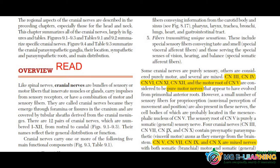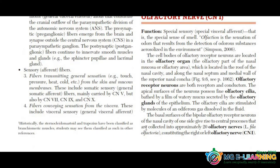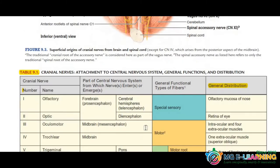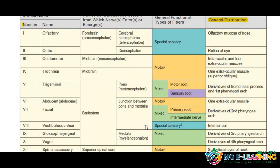In the overview, you will see the components like motor, visceral, and sensory components. These may be asked in the Viva because it is always important. Then skip to Table 9.1 — you have to learn and understand it. You need to understand where the nerve is coming from and what the general distribution is.